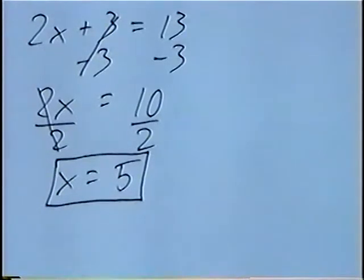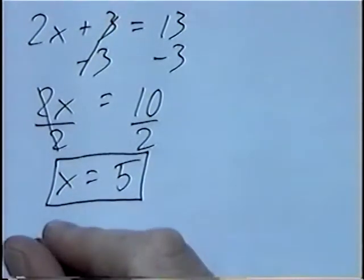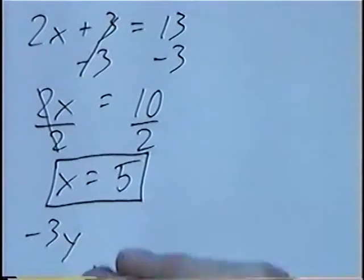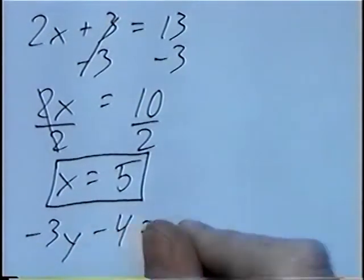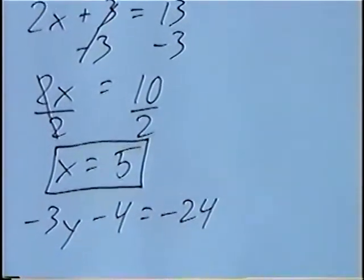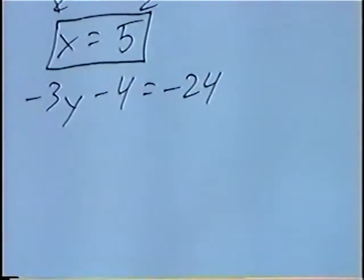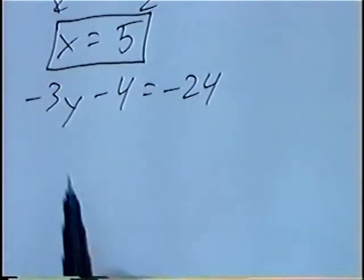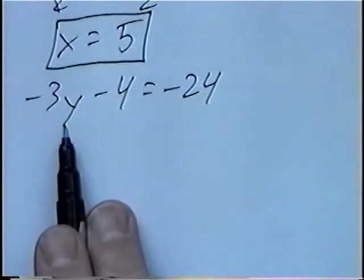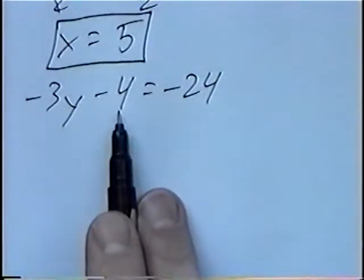Second question, and last question for the section. Negative 3y minus 4 equals negative 24. Solving, we want to get y by itself. And again, the numbers away from y we'll get rid of first.